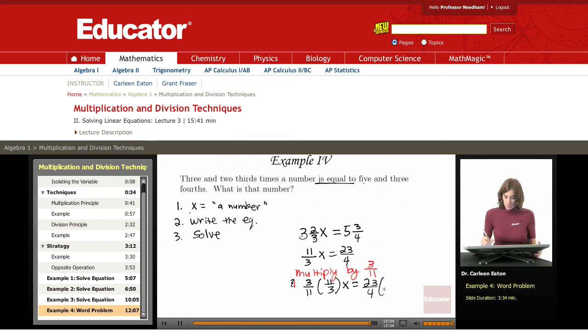And then what I get is the coefficient of x canceling out because three divided by three is one, eleven divided by three is one, so that gives me x equals twenty-three-fourths times three-elevenths.